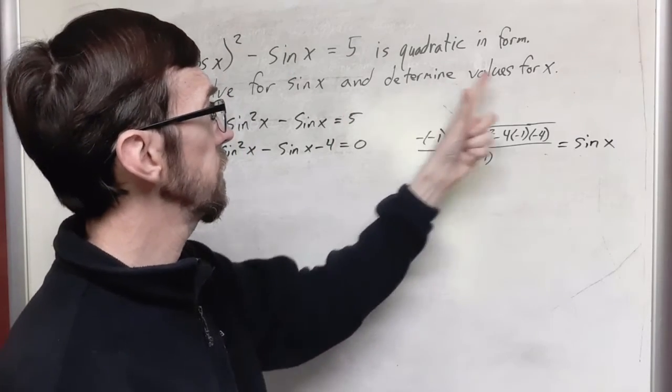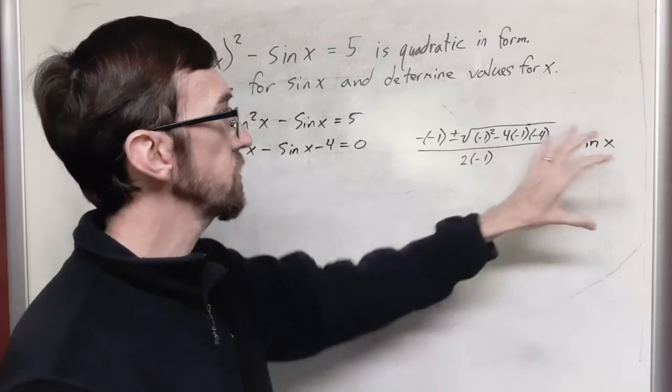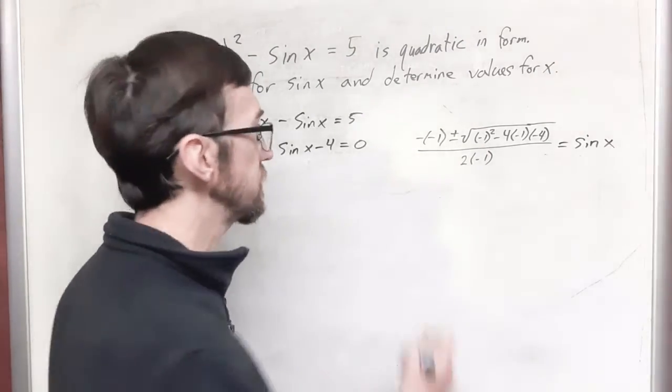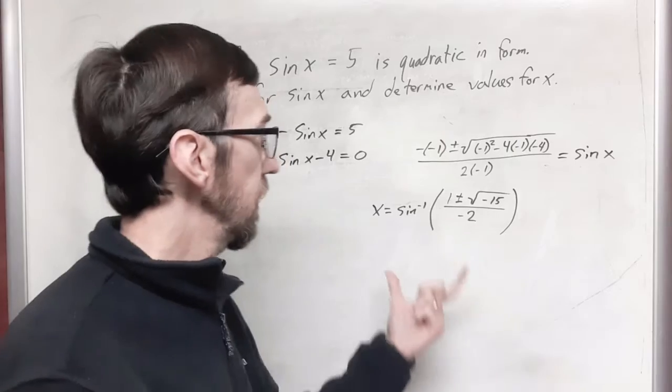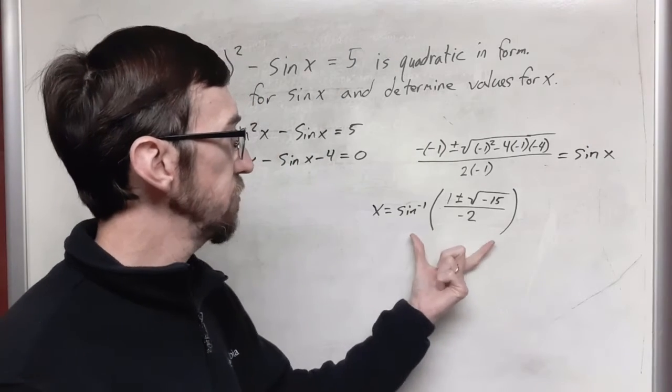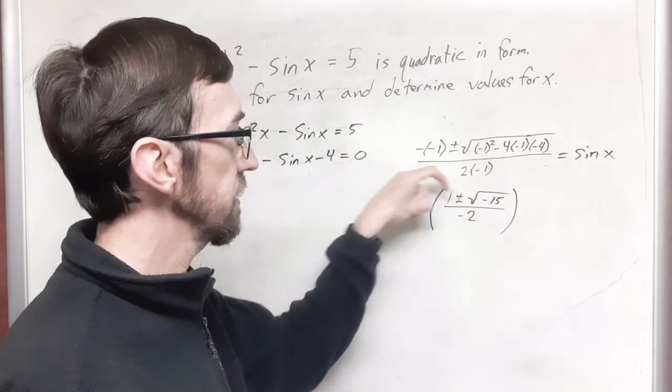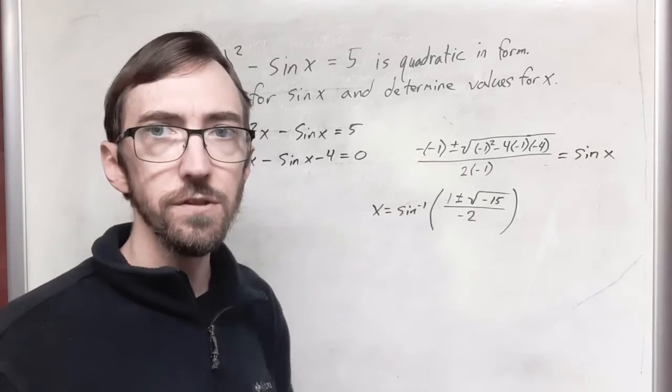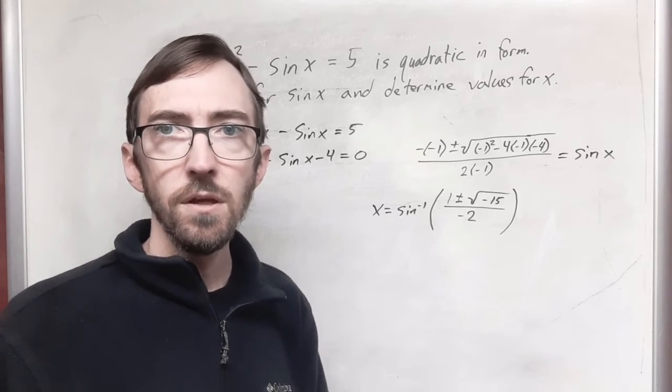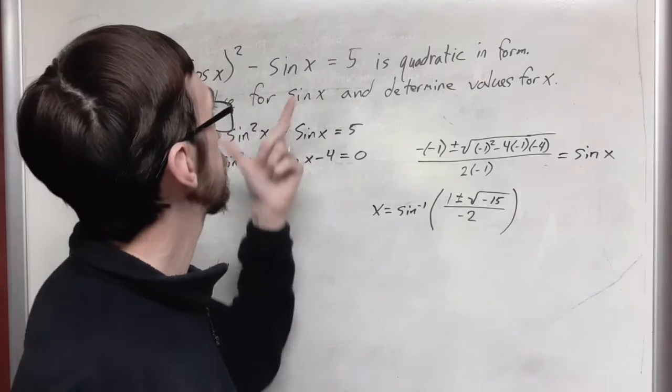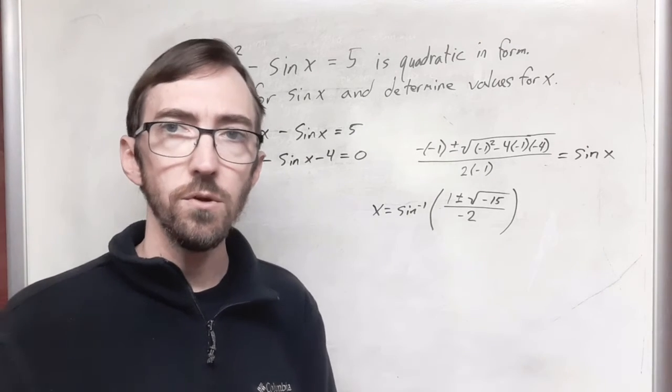And lastly, we're told to determine the values for x. If we want to know this thing for x, we need to take the arc sine of both sides. So x is going to be equal to the arc sine. Our x's will be the arc sine of this. This is at least two solutions. You have a case where you have addition in the numerator and a case where you have subtraction in the numerator. And then you need to determine what angles that you can have to make this a true statement. And these are going to have to be complex solutions. There are no real solutions.